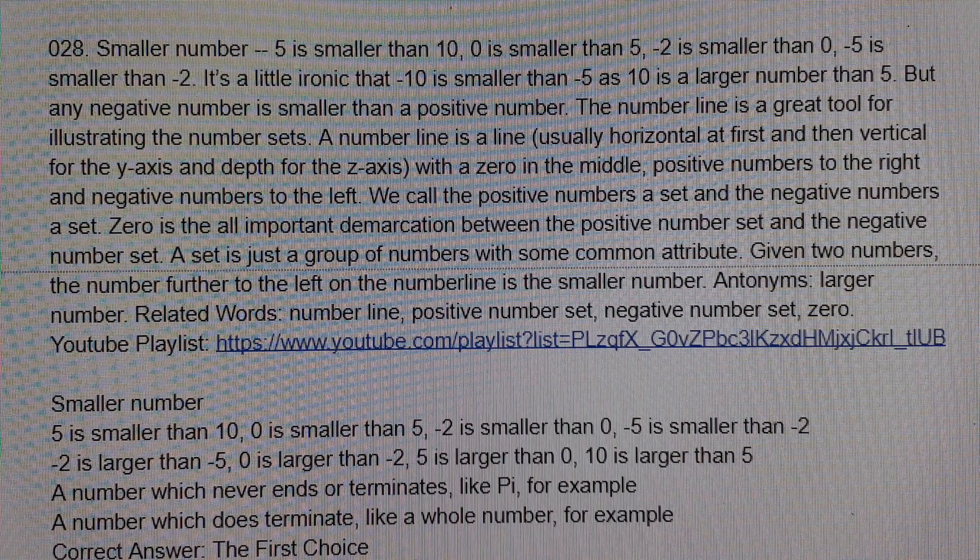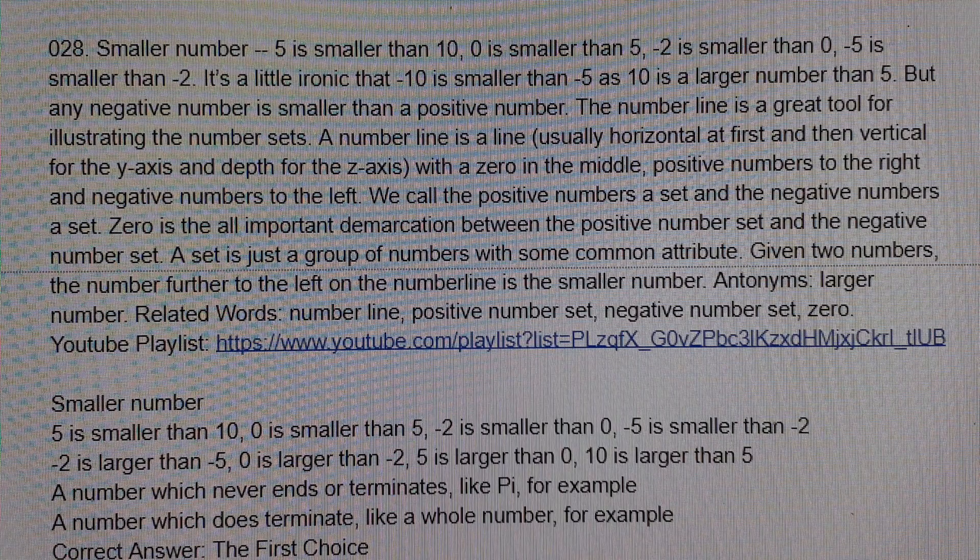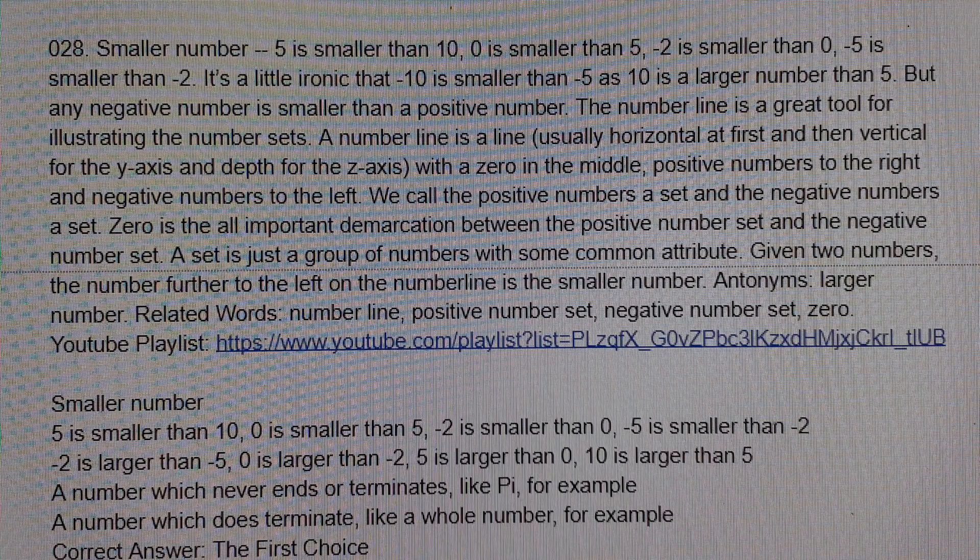Antonyms: larger number. Related words: number line, positive number set, negative number set.